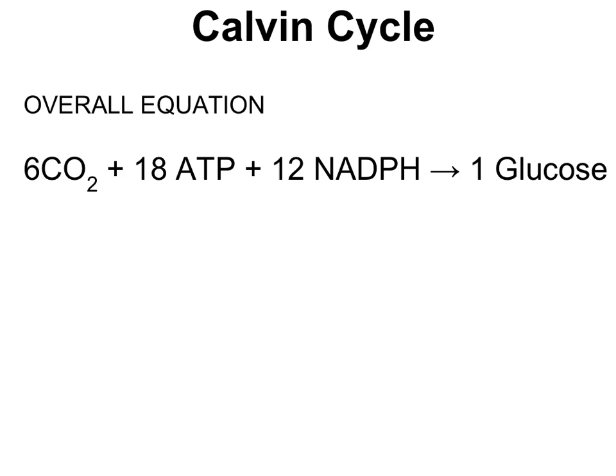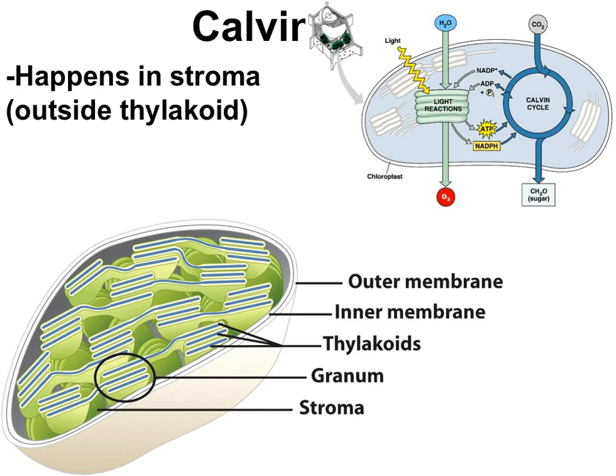Here's the equation for the Calvin Cycle: six carbon dioxides plus 18 ATPs plus 12 NADPHs react to form one glucose. Where did the reactants come from? ATP and NADPH came from the light-dependent reactions. And only now in photosynthesis does carbon dioxide join the party — this carbon dioxide comes from the atmosphere through the stomata and hangs out in the gaps of spongy mesophyll until needed.